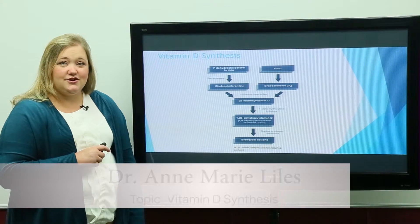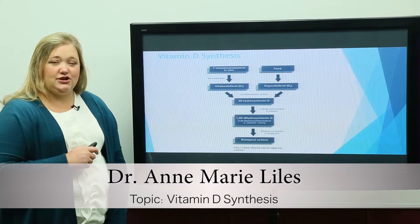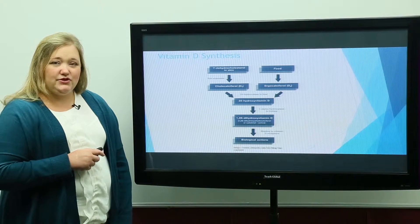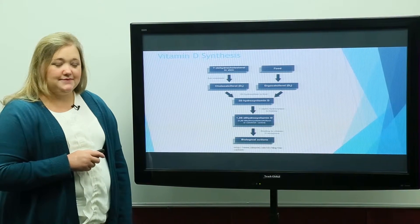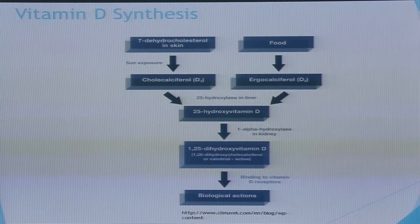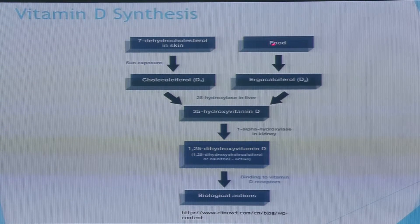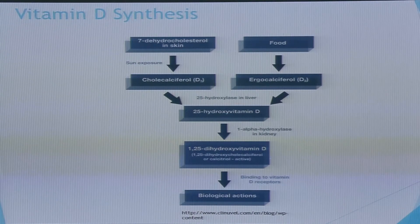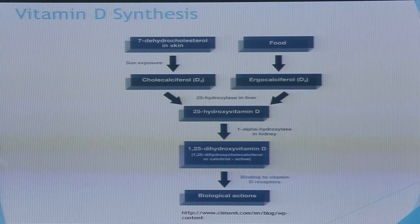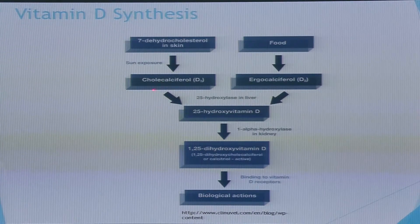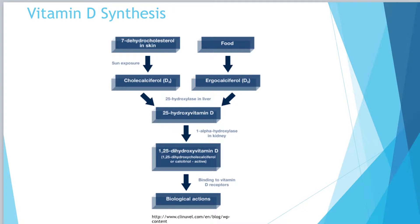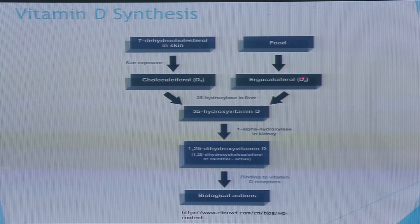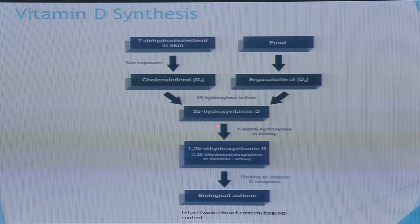Vitamin D is our other area that we need to target with drug therapy, so let's review vitamin D synthesis. We get vitamin D from two places: from our skin through sun exposure, and from food. The vitamin D from the sun produces the inactive product D3, or cholecalciferol, while the product from food is ergocalciferol, or D2.